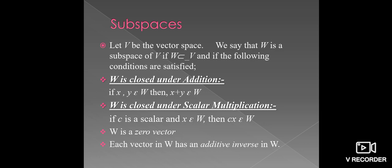Next, W is closed under scalar multiplication. Here, the scalar means C is the scalar and X be the vector which belongs to the subspace W, then the multiplication CX, which also belongs to the subspace W. Also, W is a zero vector, and each vector in W has an additive inverse in W.